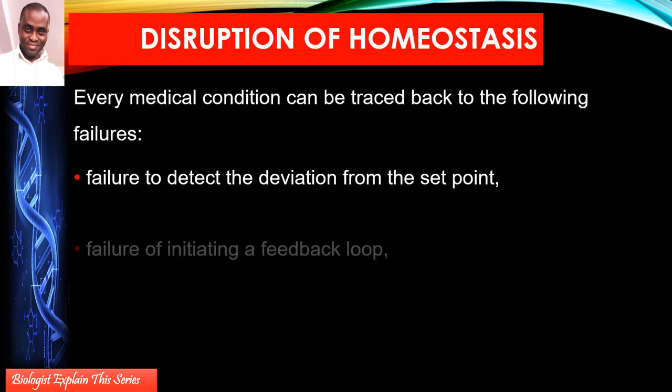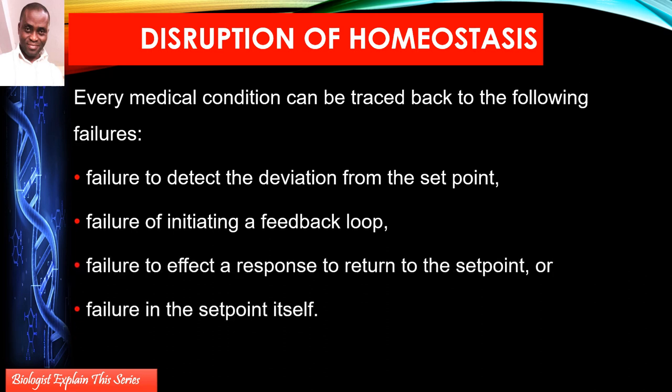Still on disruption of homeostasis: every medical condition can be traced back to a failure of something. It is either the receptors — the part of the body concerned with sensing and monitoring — that have failed, so you have a failure to detect a deviation. The blood pressure has gone up unnoticed; blood glucose level has risen, causing hyperglycemia — too much sugar in the blood — or crashed, causing hypoglycemia — too little sugar.